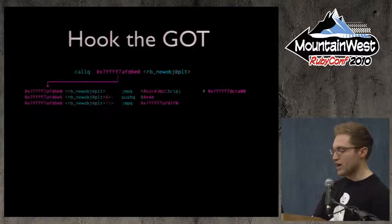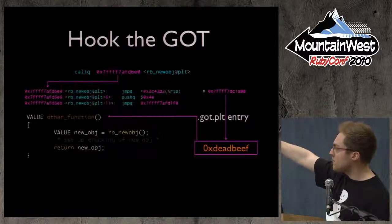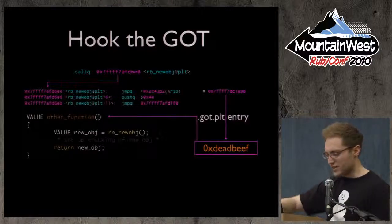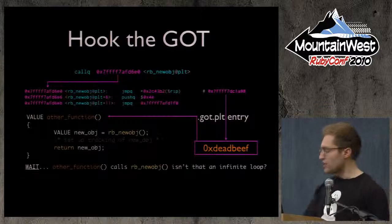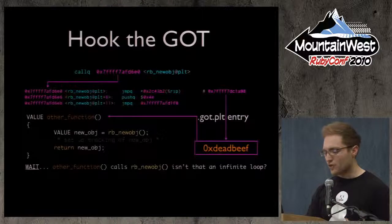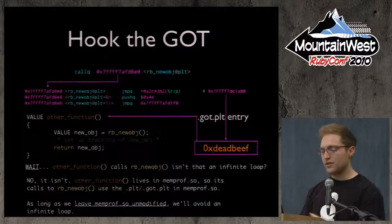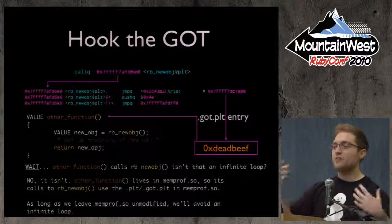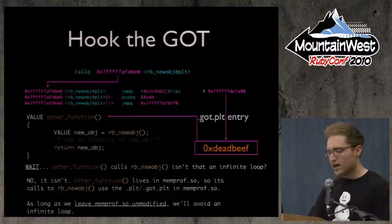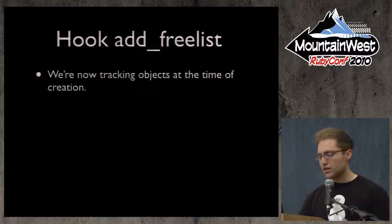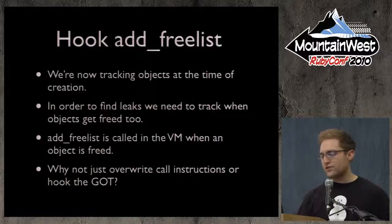You might wonder: if our other function calls rb_newobj, won't it loop infinitely? No — each shared object has its own state. Our function lives in the Memprof shared library. As long as we don't modify Memprof's own tables but modify everybody else's, Memprof will still resolve symbols the normal way while everyone else is redirected. So we're now tracking object allocation. But to find leaks, we also need to track when objects get freed. add_freelist is called in the VM when an object is freed — so why not just hook that the same way?